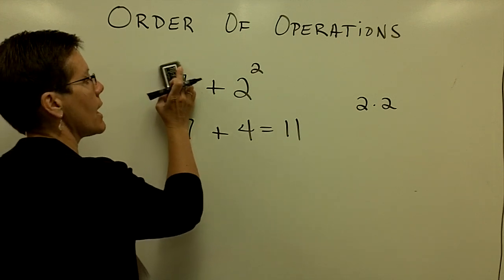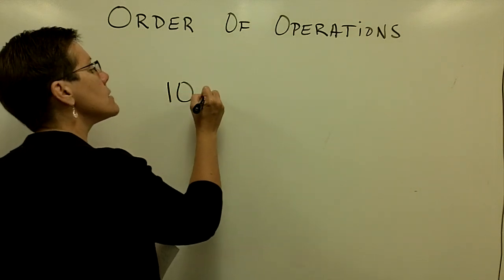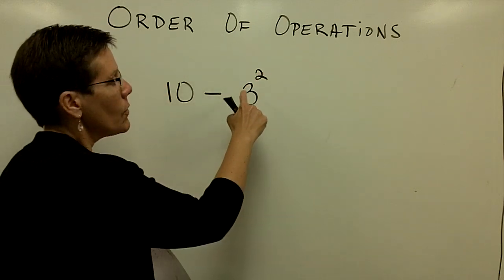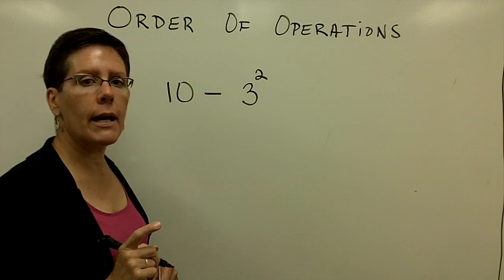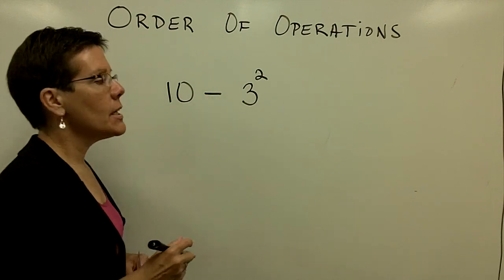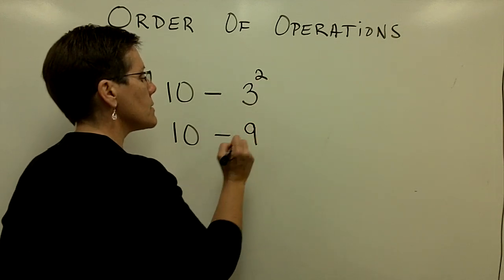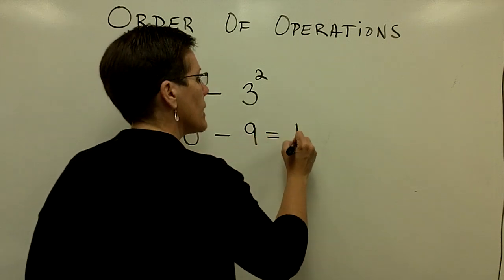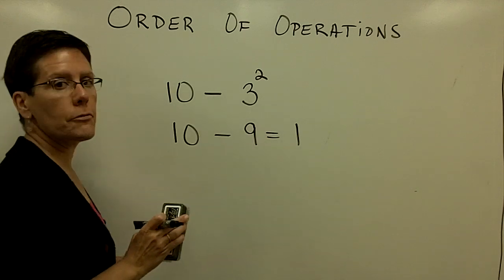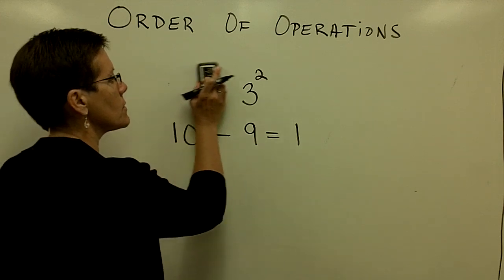I'm going to put a subtraction sign in front of something raised to a power in the next problem. I have 10 minus the value of 3 squared. 3 squared is 3 times 3, or 9. This does not mean negative 3 squared — it means that I should take 10 and subtract whatever 3 squared is, which is 9, and get a value of 1. Be very careful of that. Sometimes we will put a negative sign in front of a number in parentheses and ask you to square it, but this is not in parentheses — that will come later.